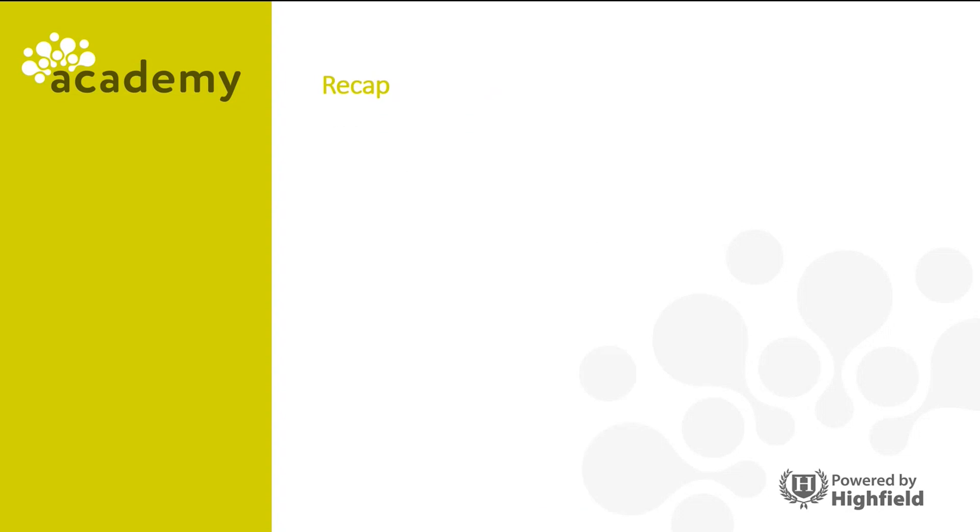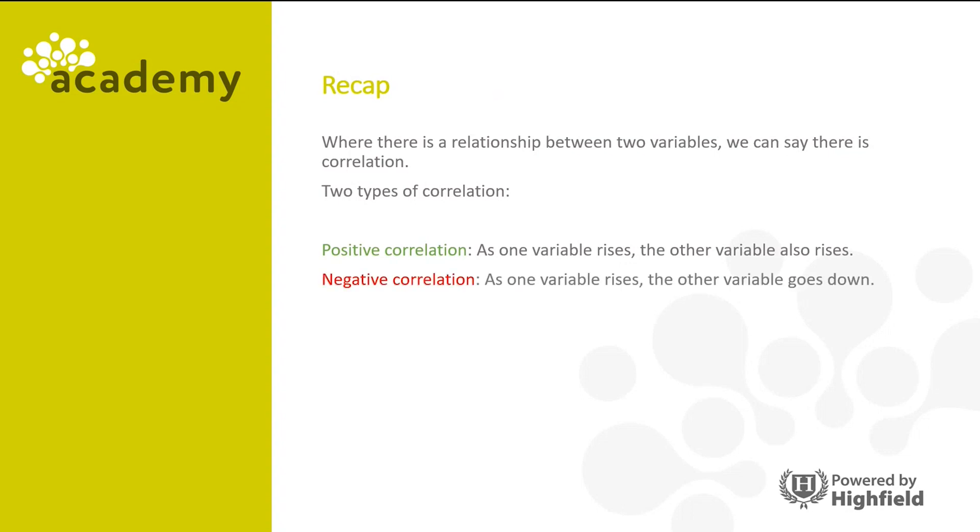Let's recap. Where there's a relationship between two variables, we can say there is correlation. There are two types of correlation: positive correlation, so as one variable rises so does the other, and negative correlation, where one variable rises the other decreases. If the plotted points are randomly spread, we can see that there is no correlation.